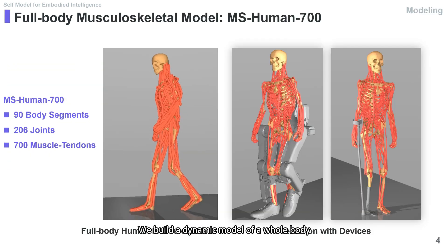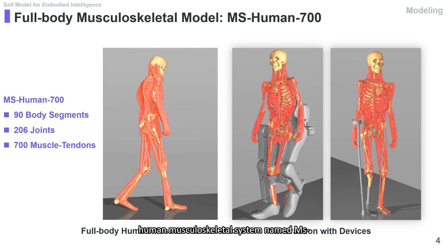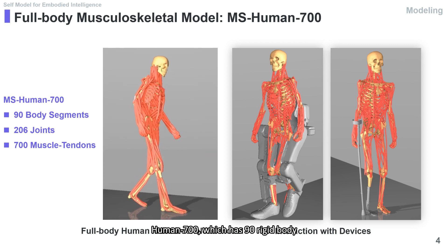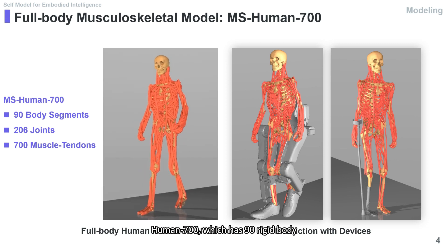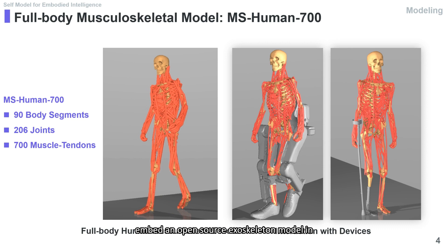We build a dynamic model of a whole-body human musculoskeletal system named MS-Human-700, which has 90 rigid body segments, 206 joints, and 700 muscle tendon units. The model is simulated in the MuJoCo engine. We also embed an open-source exoskeleton model in simulation to demonstrate human-machine interactive walking.